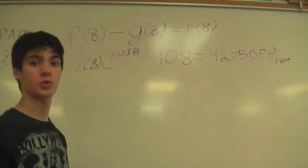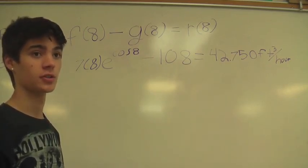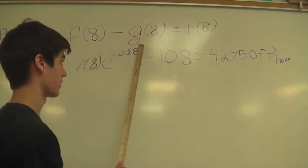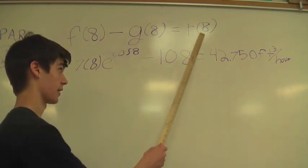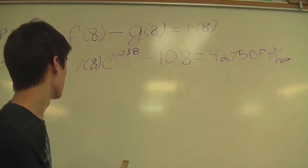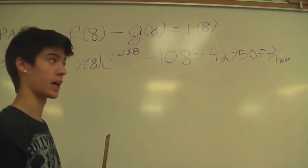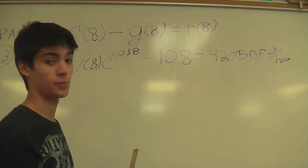For part B of the problem, we were supposed to find the rate of change at 8 a.m. of snow accumulation. To do this, we found the rate at which the snow was accumulating minus the rate at which Bob was shoveling the snow and defined the rate of change at 8. So we took 7 times 8 times e to the cosine of 8 minus 108 and got approximately 42.75 cubic feet per hour.